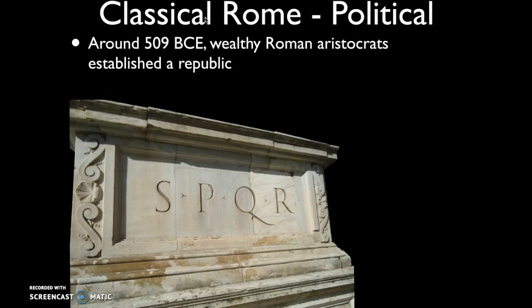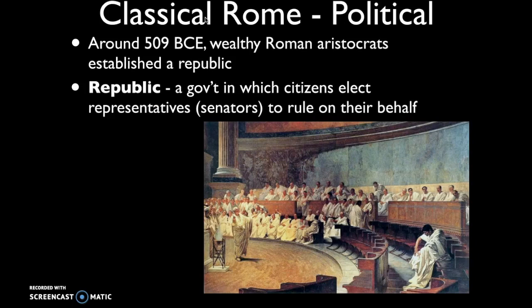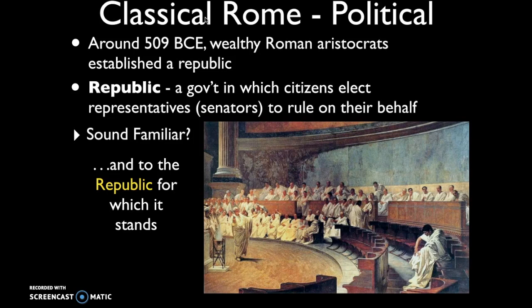Around 509 BCE, Rome was a small city. The wealthy Roman aristocrats booted out the ruler and established a republic — Senatus Populusque Romanus — the Senate and the people of Rome. A republic is a form of government in which citizens elect representatives, referred to as senators, to rule on their behalf. It's distinct from a democracy: in a direct democracy, people vote directly on the issues, whereas in a republic, people vote for elected representatives to make decisions on their behalf. This should sound familiar — our government was initially set up as a republic based on the model of the Roman Republic.